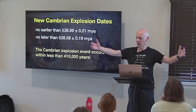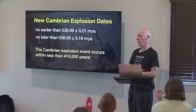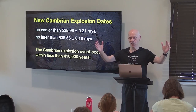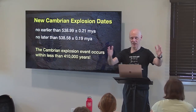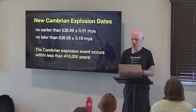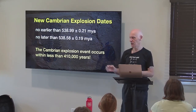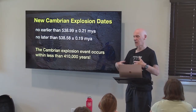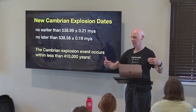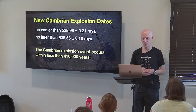New radiometric tools applied to the Cambrian explosion show it took place no earlier than 538.99 million years ago and no later than 538.58 million years ago. The Cambrian explosion did not occur over a 5 million year window as Wikipedia states — it's now been shrunk down to just 410,000 years. The maximum time to bring about all these phyla is only 410,000 years. If we're talking about the appearance of 50-plus phyla in just 410,000 years, there's really no possibility of interpreting that from a naturalistic perspective.